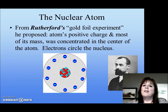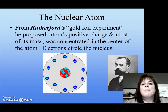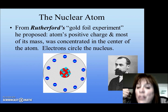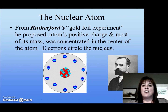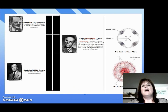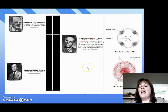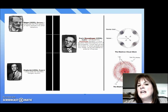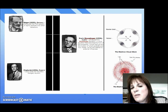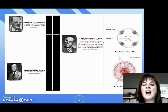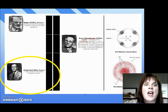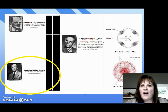This is called the nuclear atom. Rutherford, through his gold foil experiment, proposed that the atom's positive charge and most of its mass is concentrated in the middle — we call that the nucleus — and then the electrons are all on the outside. After that comes Schrodinger, who proposed the electron cloud theory of the atom — we'll talk more about that when we get into quantum mechanics. Our last stop is James Chadwick, who in 1931 discovered the neutron.